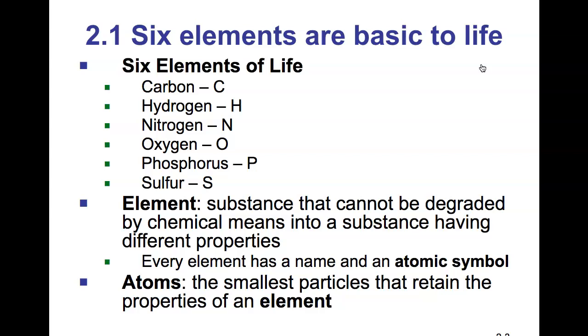When we relate that to living things, there are six elements that are basic to life on Earth. The six elements include carbon, hydrogen, nitrogen, oxygen, phosphorus, and sulfur. And if you look at their atomic symbols, C-H-N-O-P-S,